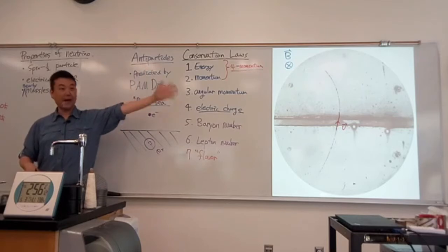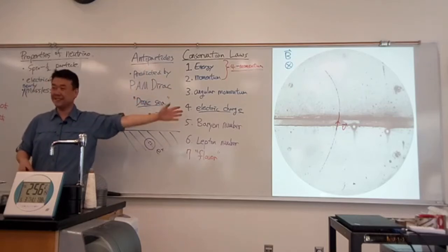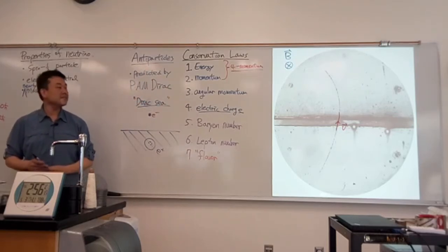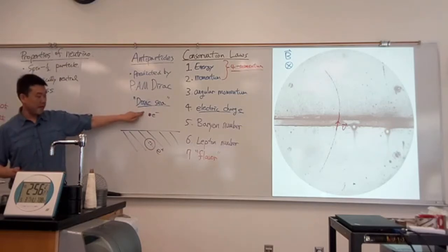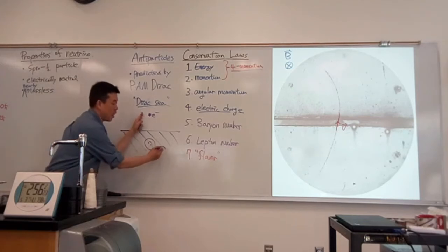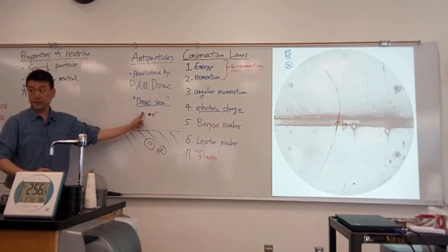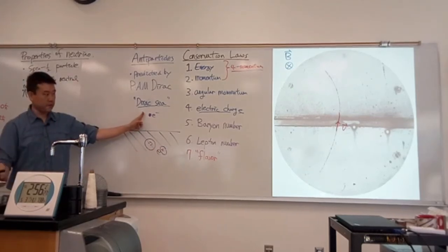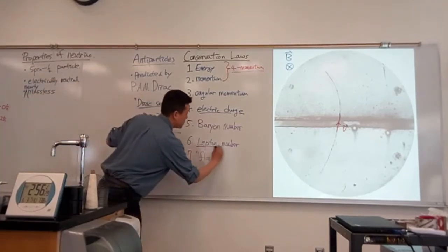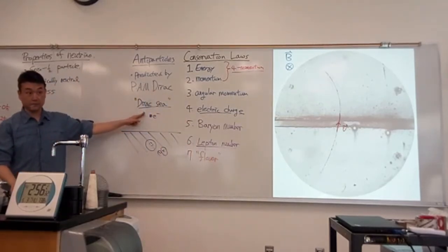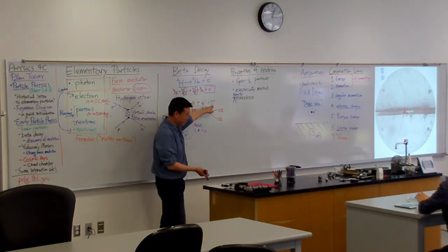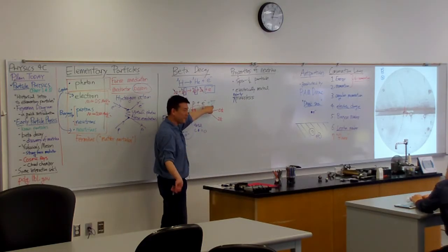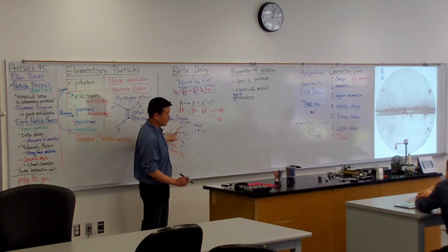That's where the prediction of the antiparticle comes from. It was predicted, people looked for it, and they found it—antiparticles exist. The easiest way to think of antiparticles is they're the same as the particle, except they have opposite charge. Certain quantum numbers, like lepton numbers, are also negative. So that's where this neutrino, instead of being a neutrino, is an antineutrino.